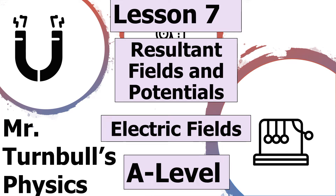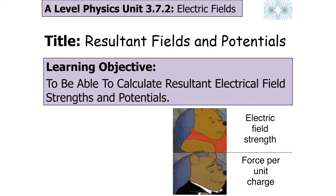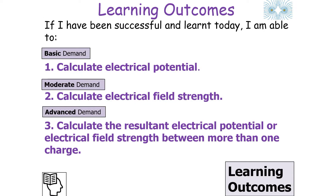Hello and welcome to this video looking at how to calculate resultant electrical field strength and resultant electrical potential, which is part of the electrical fields topic in AQA A-level physics. In today's lesson we're looking at how to calculate the resultant electrical field strengths and resultant electrical potentials in different parts of an electrical field. If successful, we should be able to calculate electrical potential, electrical field strength, and the resultant of each between more than one charge.